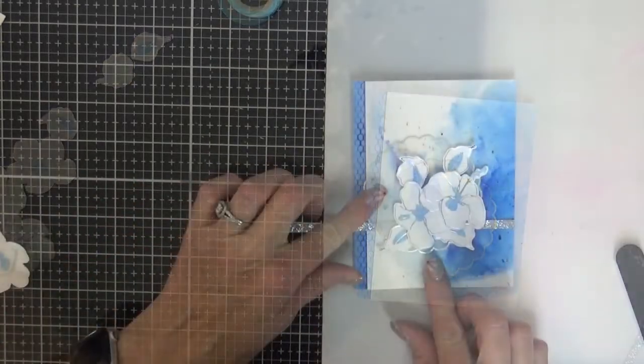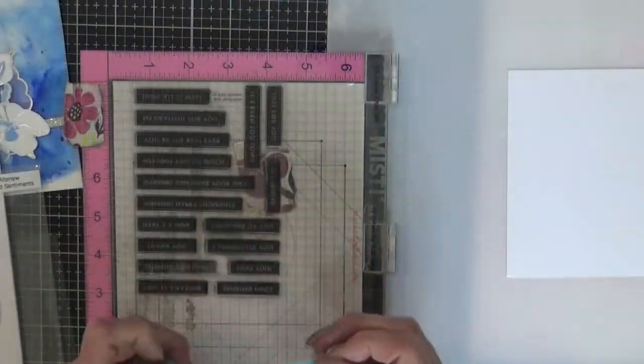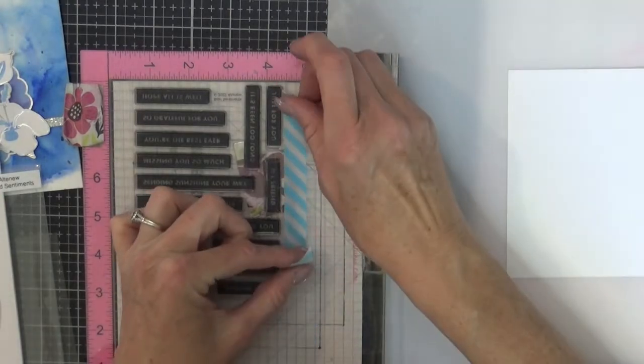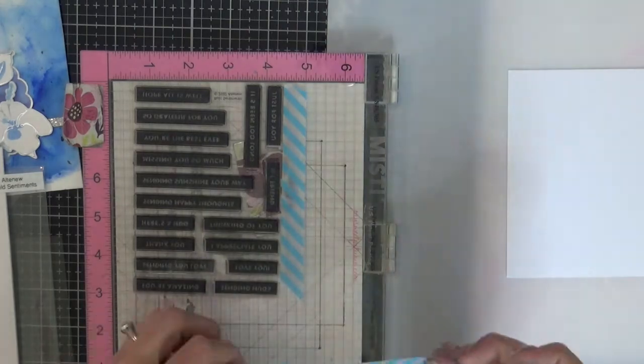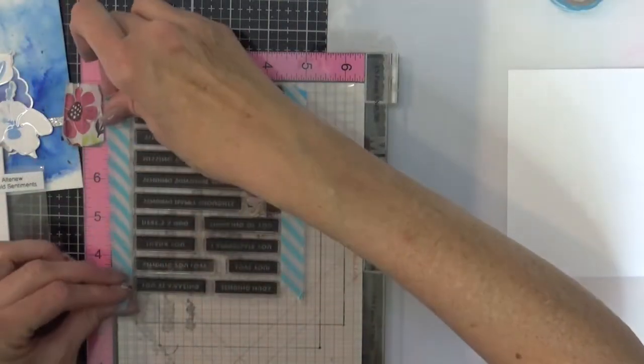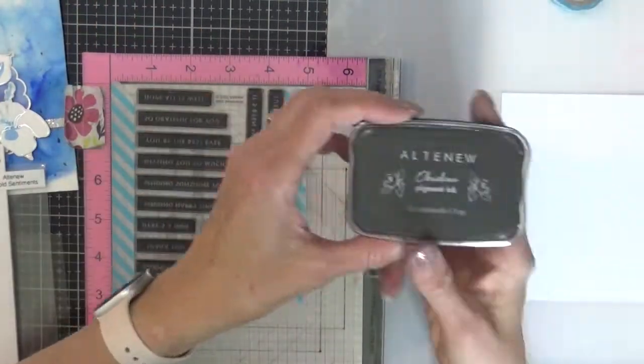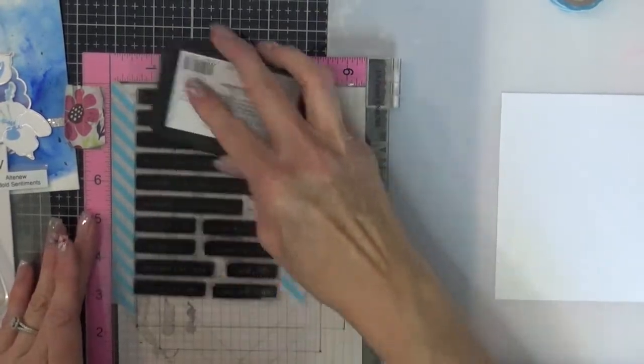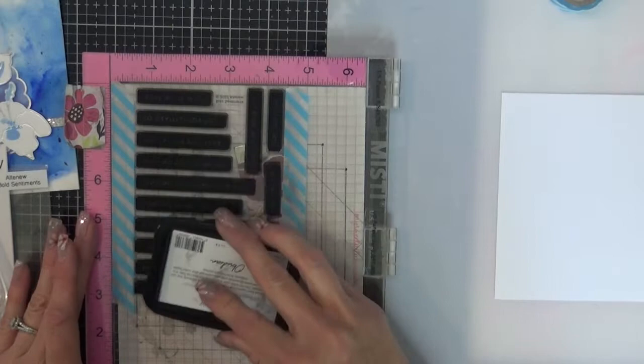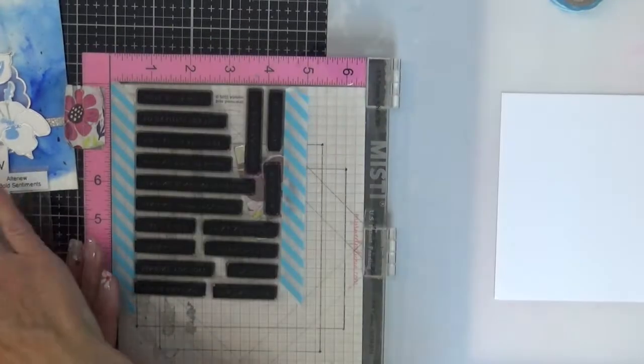For my sentiment I'm going to attach the whole bold sentiment stamp sheet to the outside of my MISTI with some washi tape, then I'll line up the paper next to it. Ink up the stamps with obsidian black ink, stamp it and cut out the one that I want. Then I'll just pop the ones that I don't use this time in with the stamp set for a quick sentiment for other cards.